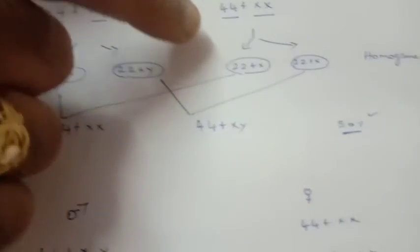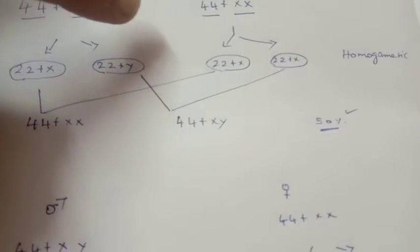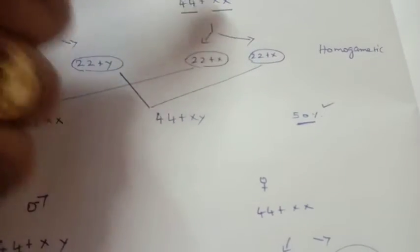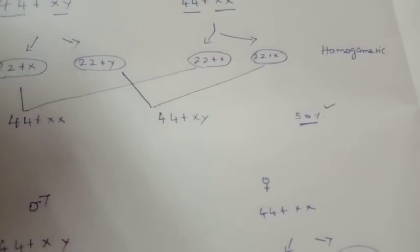But in females, at the time of gamete formation, similar gametes are formed, namely 22 plus X and 22 plus X. So they are known as homogametic individuals.